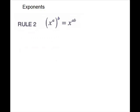Our next rule is called the power rule. When you raise a power to a power — so an exponent raised to an exponent — you will keep the base and multiply the exponents. Here's an example: we have one base raised to a power, and that whole thing is raised to another power. So we're going to keep the base and multiply 4 times 5 to get 20.